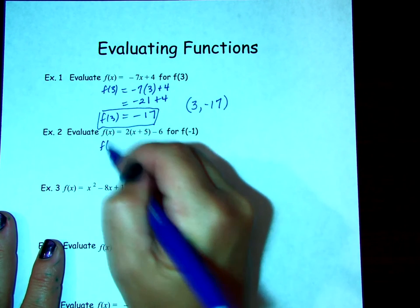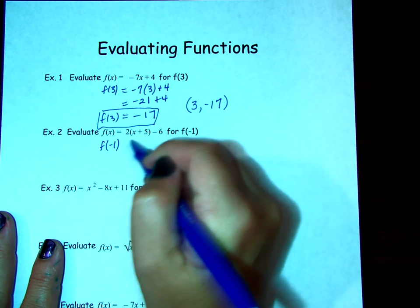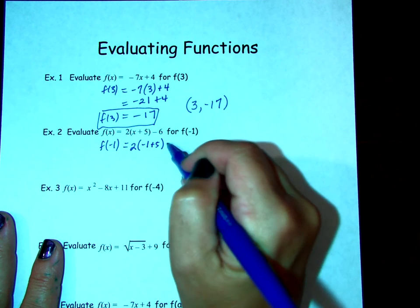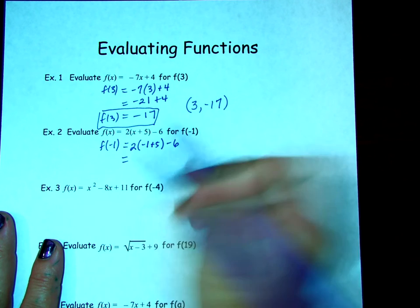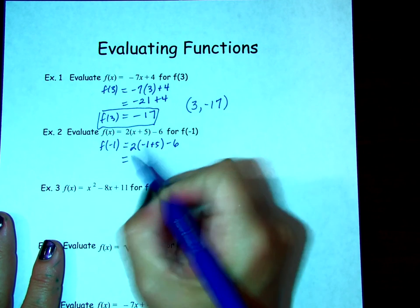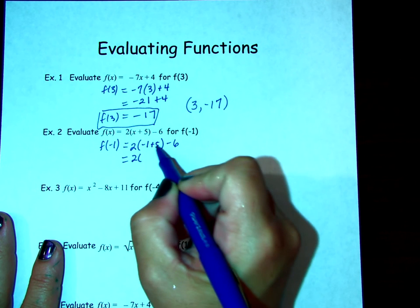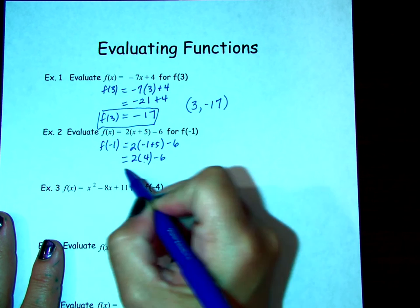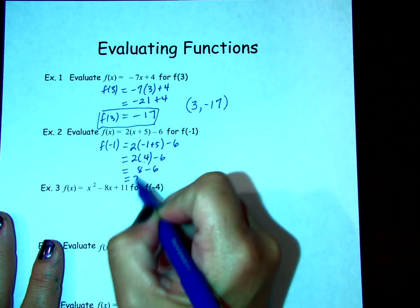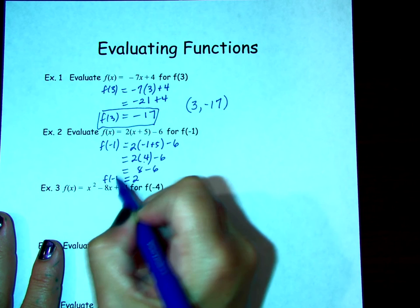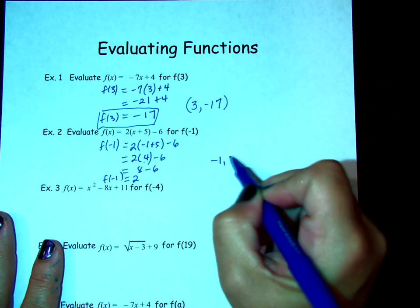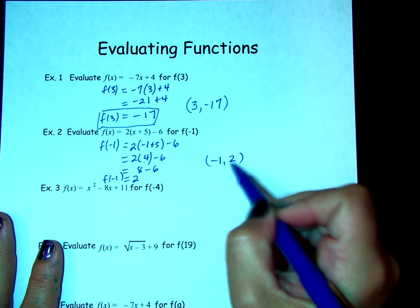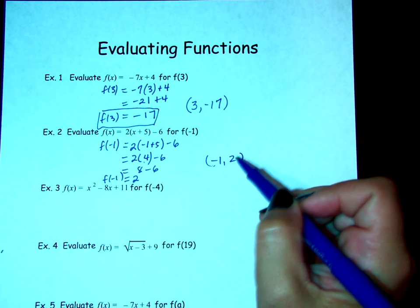So here I go. f(-1). For all instances of x, I am plugging in a -1. I'm going to do PEMDAS. Parentheses first. -1 plus 5. Then I'm going to multiply and then subtract. I get f(-1) equals 2. I could rewrite that as a coordinate pair, where -1 is my input, 2 is my output, or my x comma y coordinate pair.